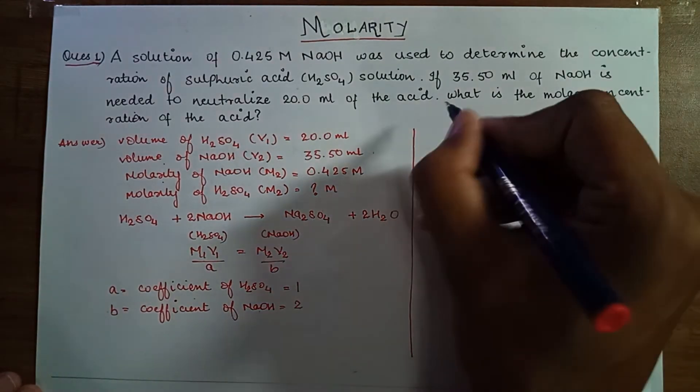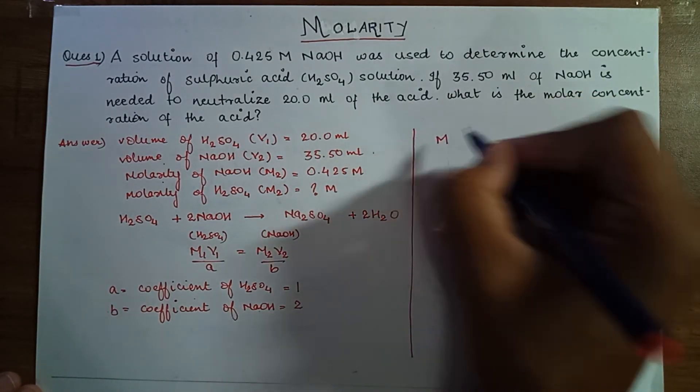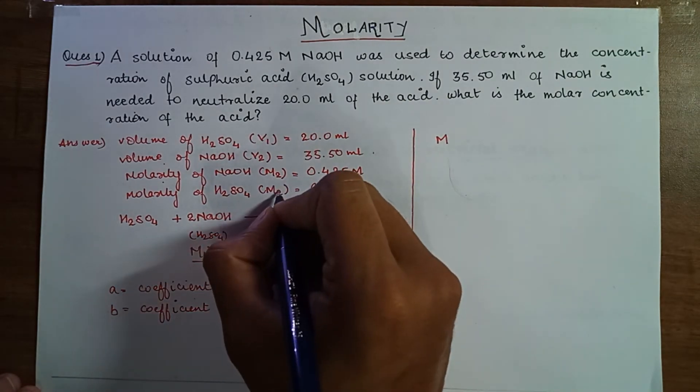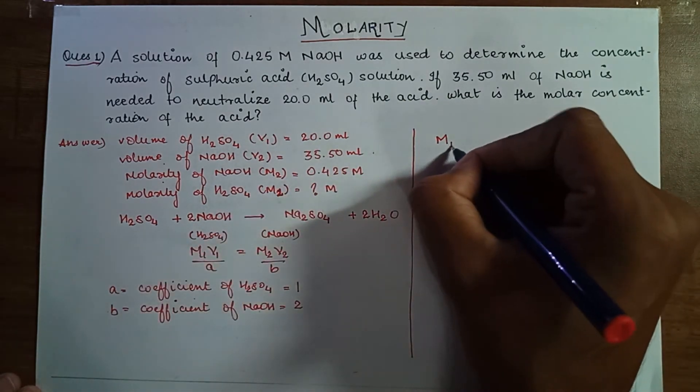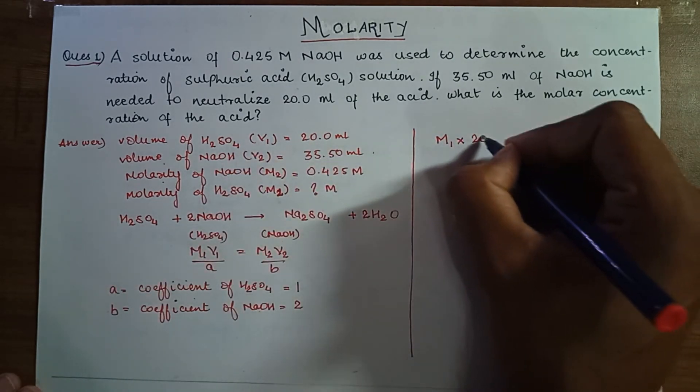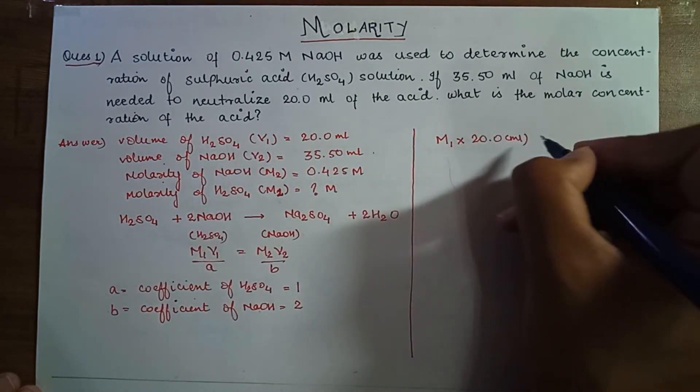Applying this formula, M1 we have to find, here it will be my M1, not M2, sorry, which we have to find. M1 we have to find, into V1. V1 is 20 ml, 20.0 ml, divided by coefficient of A, that is H2SO4, it is my 1.